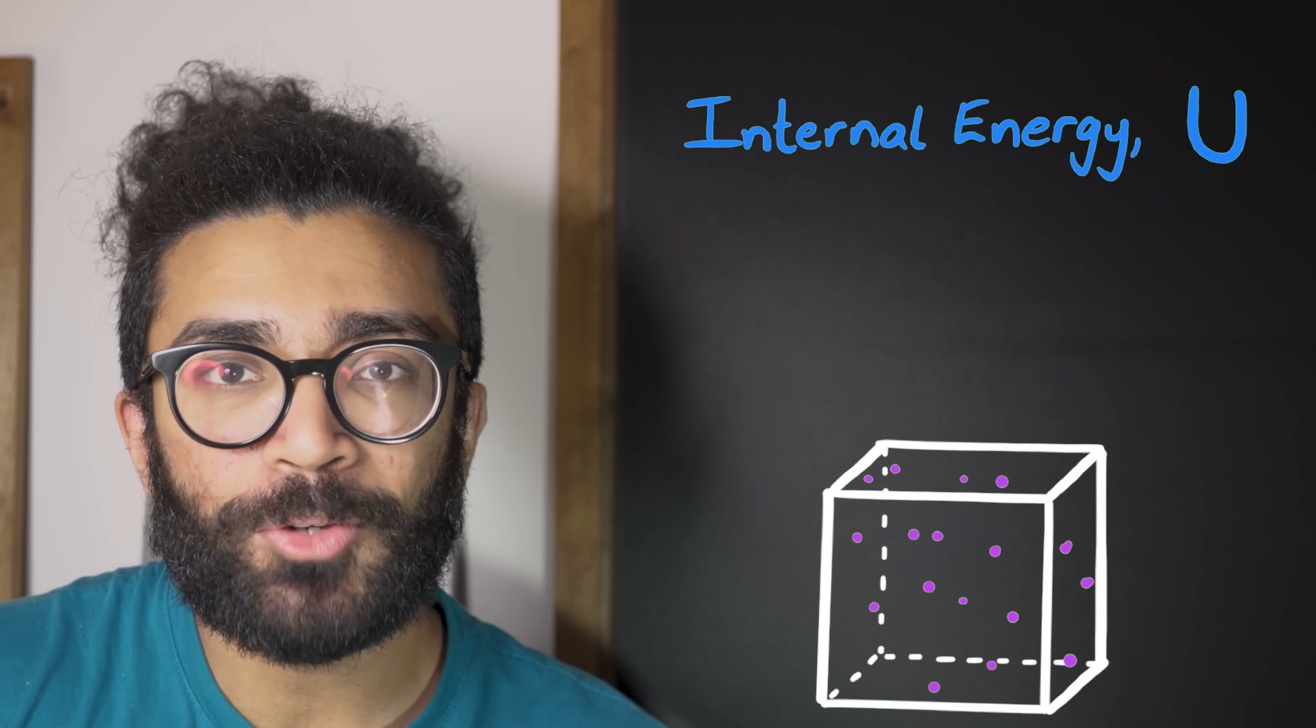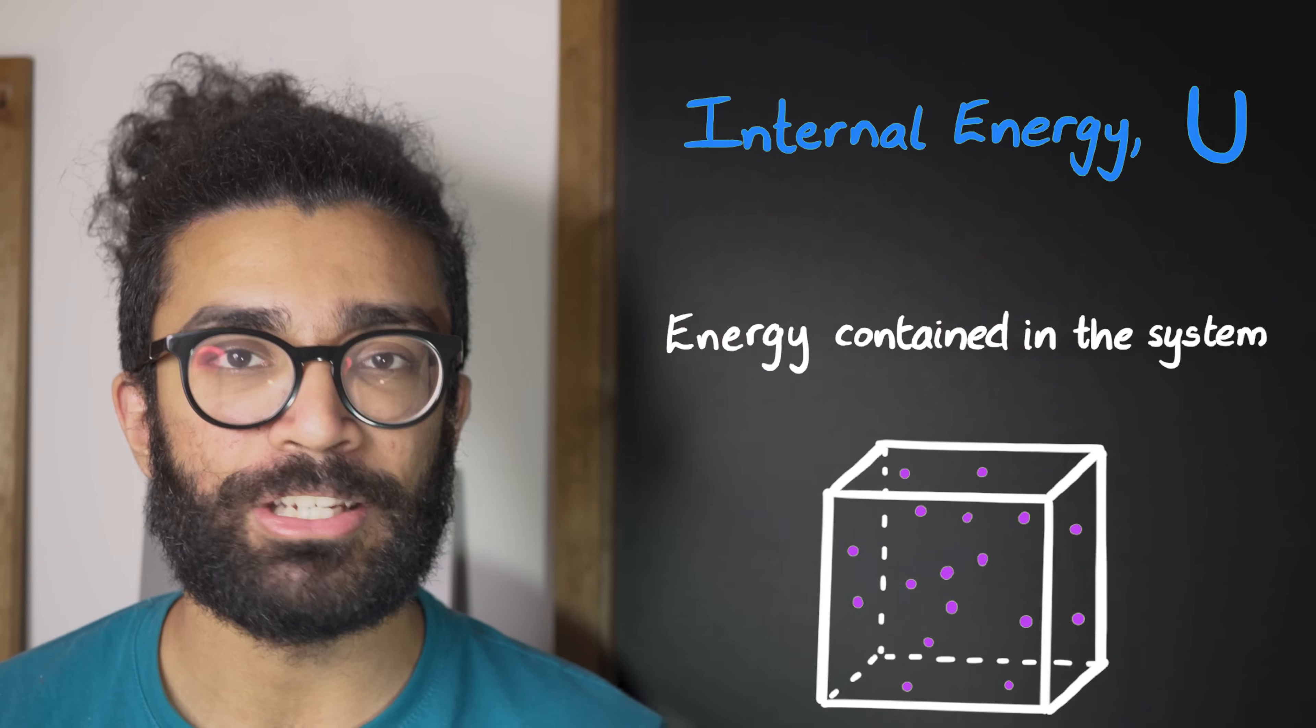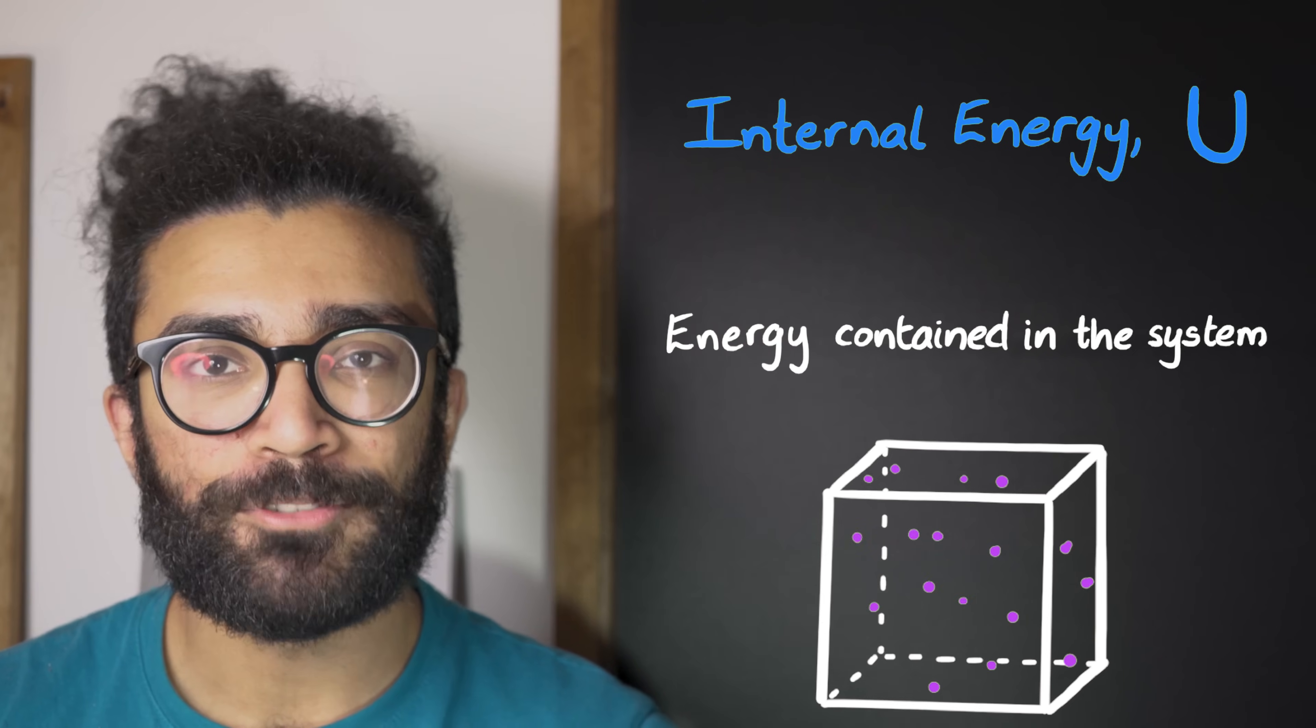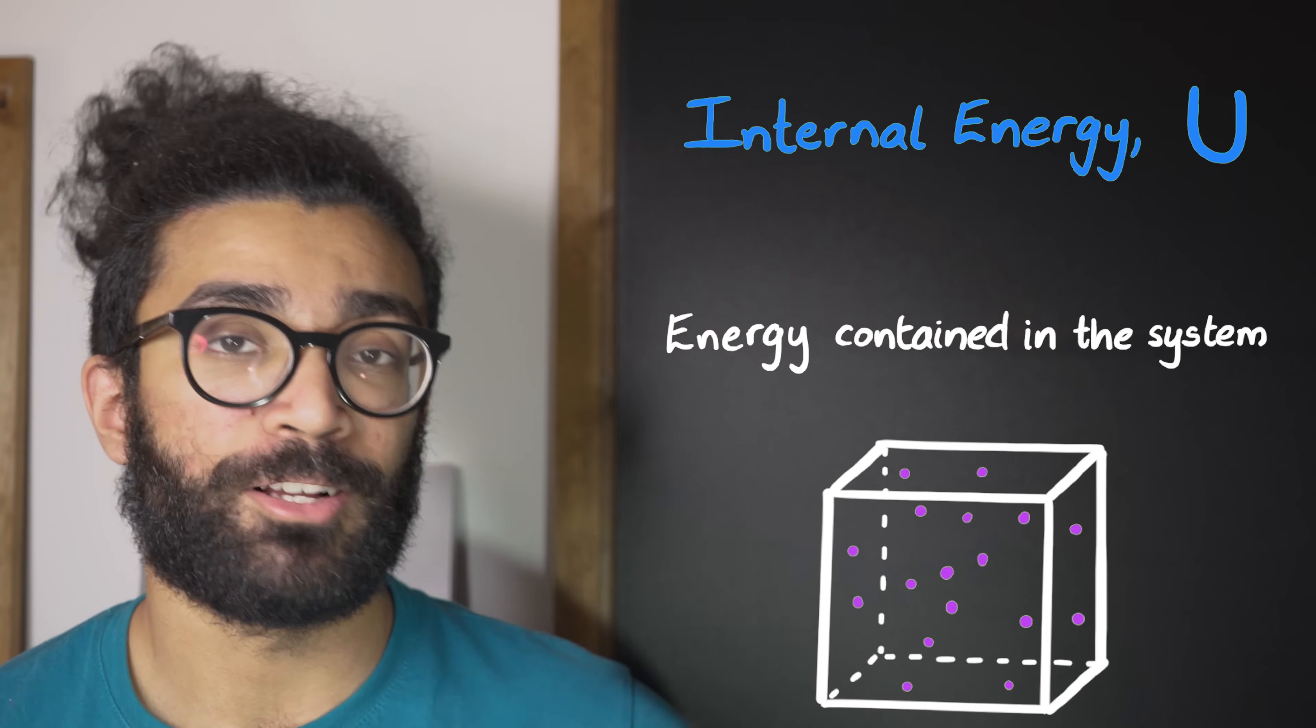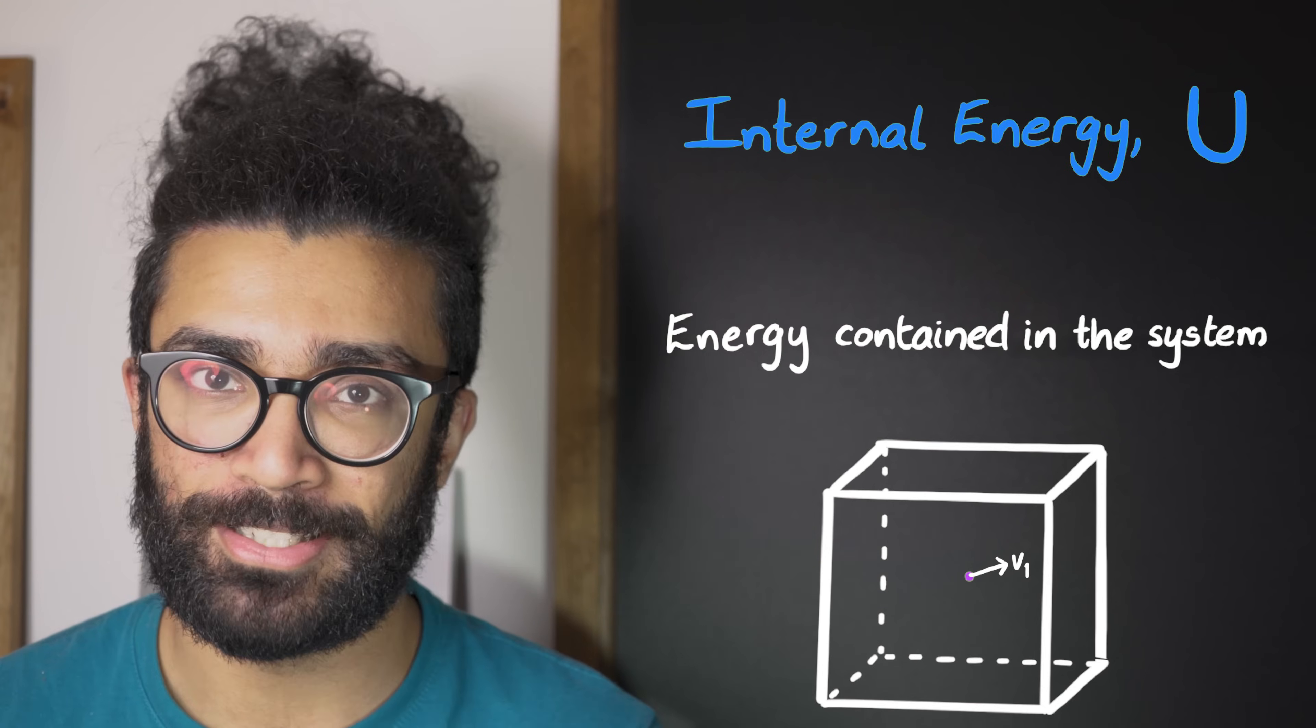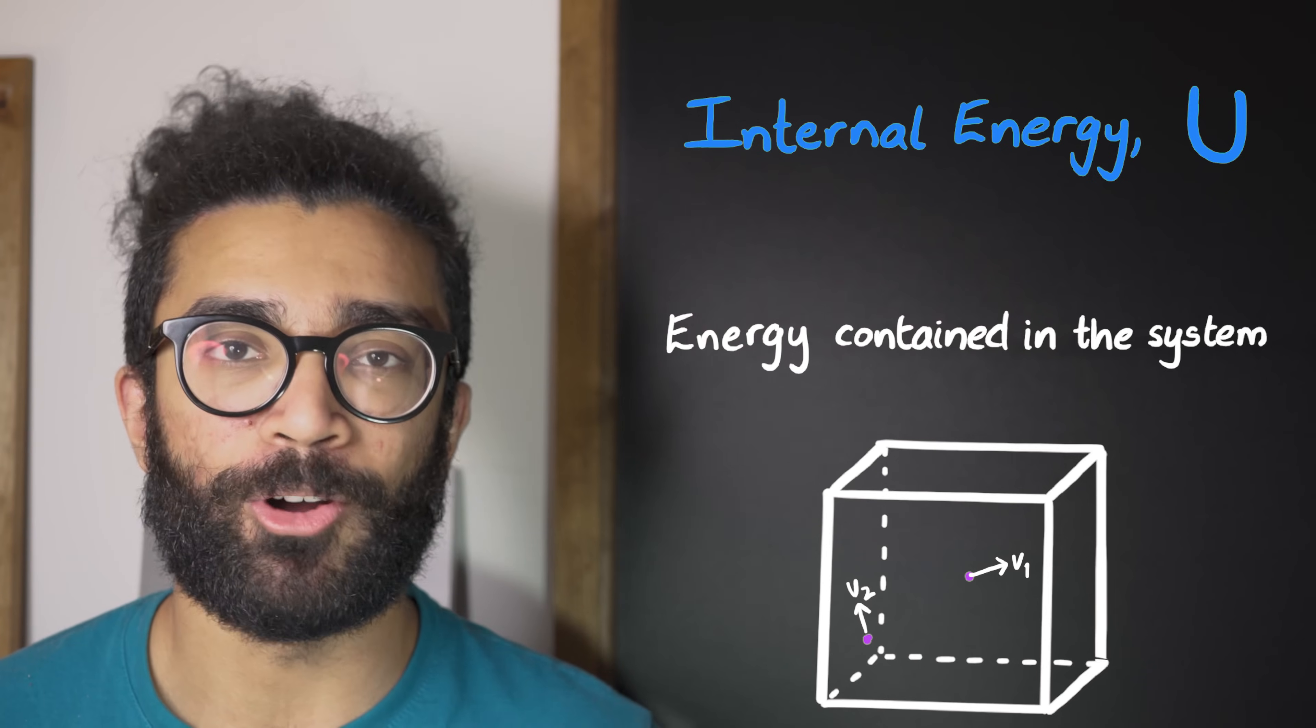Specifically, the internal energy measures how much energy there is within our system, or how much energy it took to make our system from scratch. How much energy would we have to put in to bring together this many particles, with for example this particle moving at this speed in this direction at this point in time, and this particle moving with this speed in this direction, and so on and so forth.